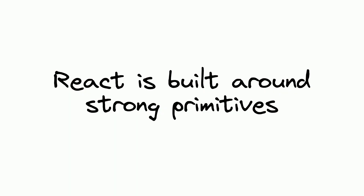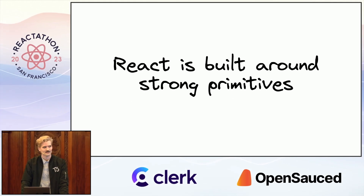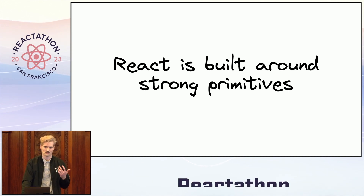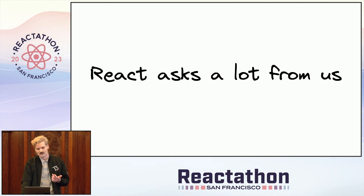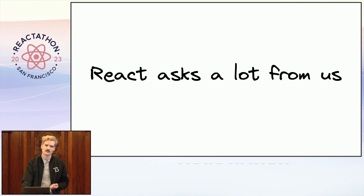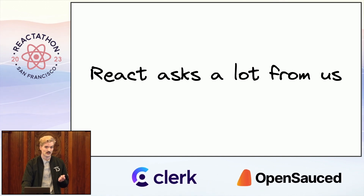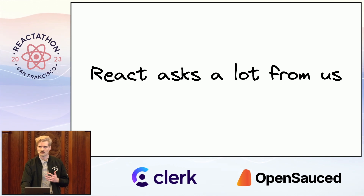React is built around strong primitives. That's both the beauty and, in a lot of ways, the biggest weakness of React. It's by design very primitive. We have these pieces that we can build and assemble and do incredible things with. But with that comes lots of problems and challenges, and React asks a lot from us as individual developers. We need to understand what it does and doesn't do and build solutions around the things it doesn't, so we can build great applications with React's primitives at the core.